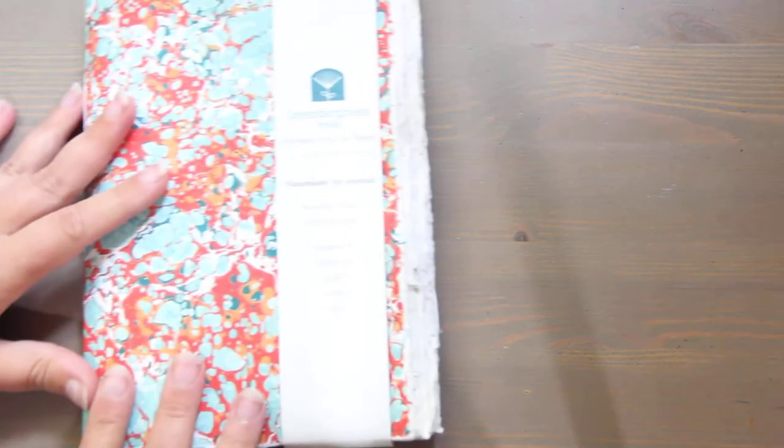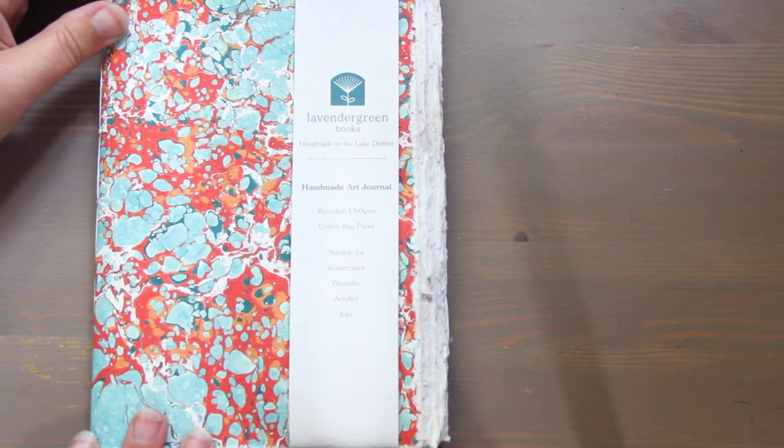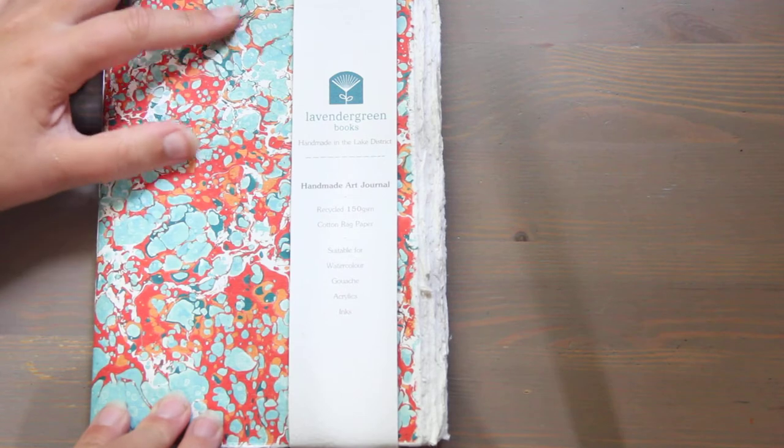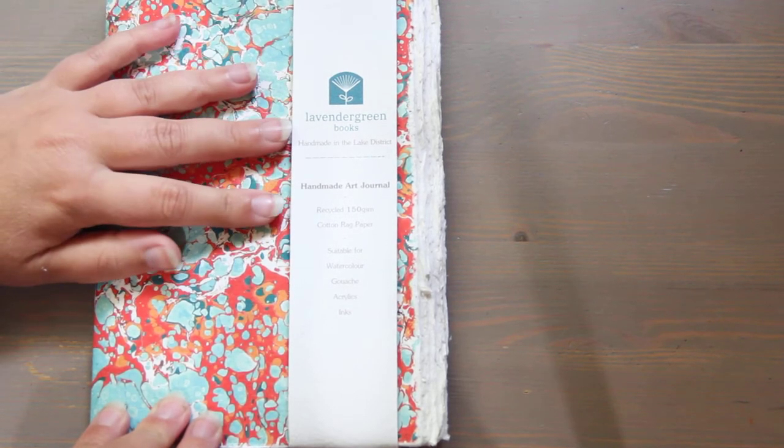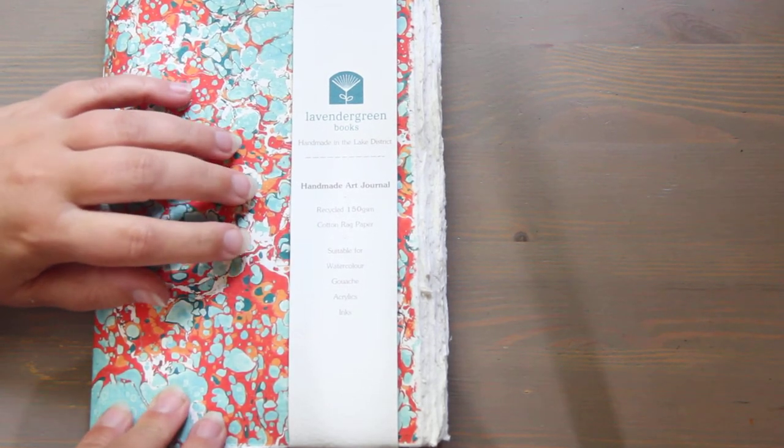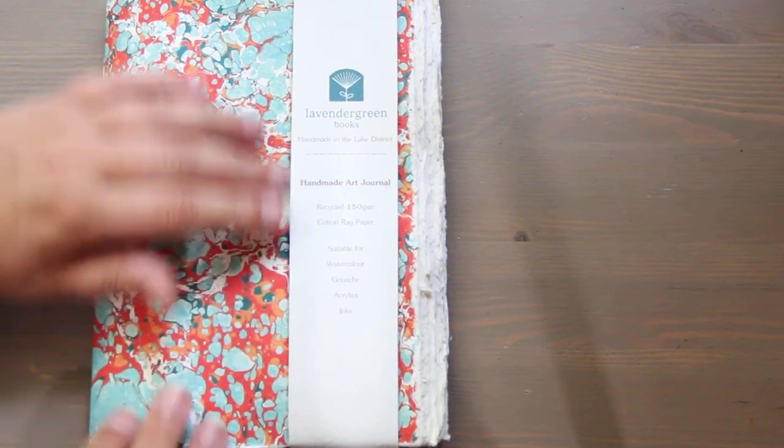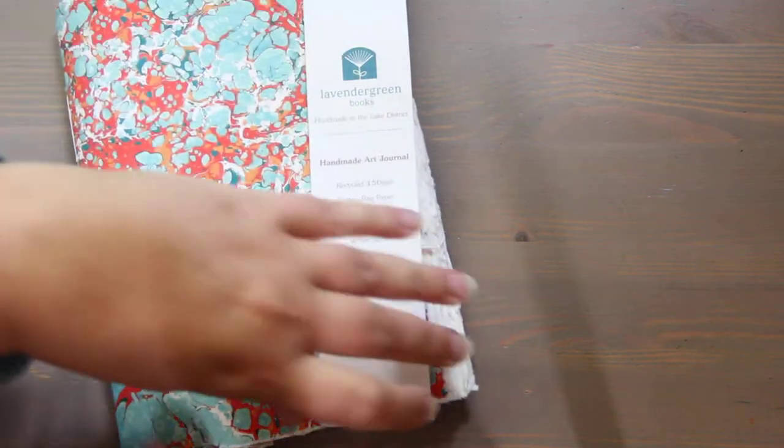So the first one I picked up is from Lavender Green Books, and again these are all purchased on Etsy, and this is shipped out of Kendal in the United Kingdom. And these books come in A5 or A6, and I got the 320 gram paper, and this is a watercolor sketchbook.